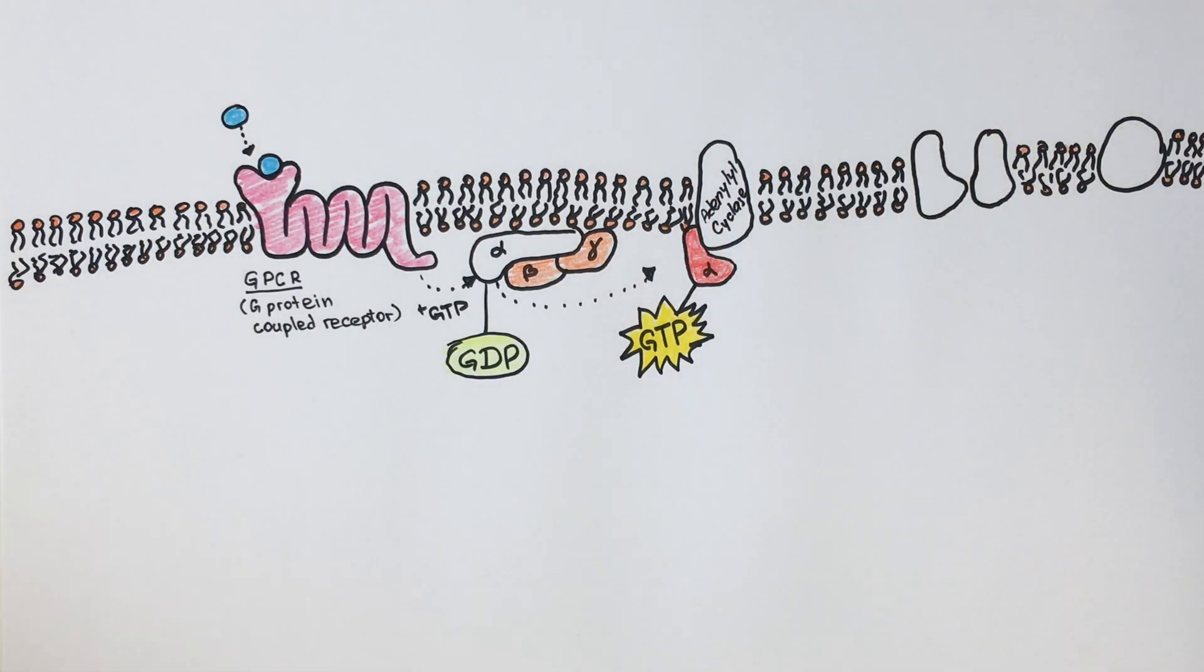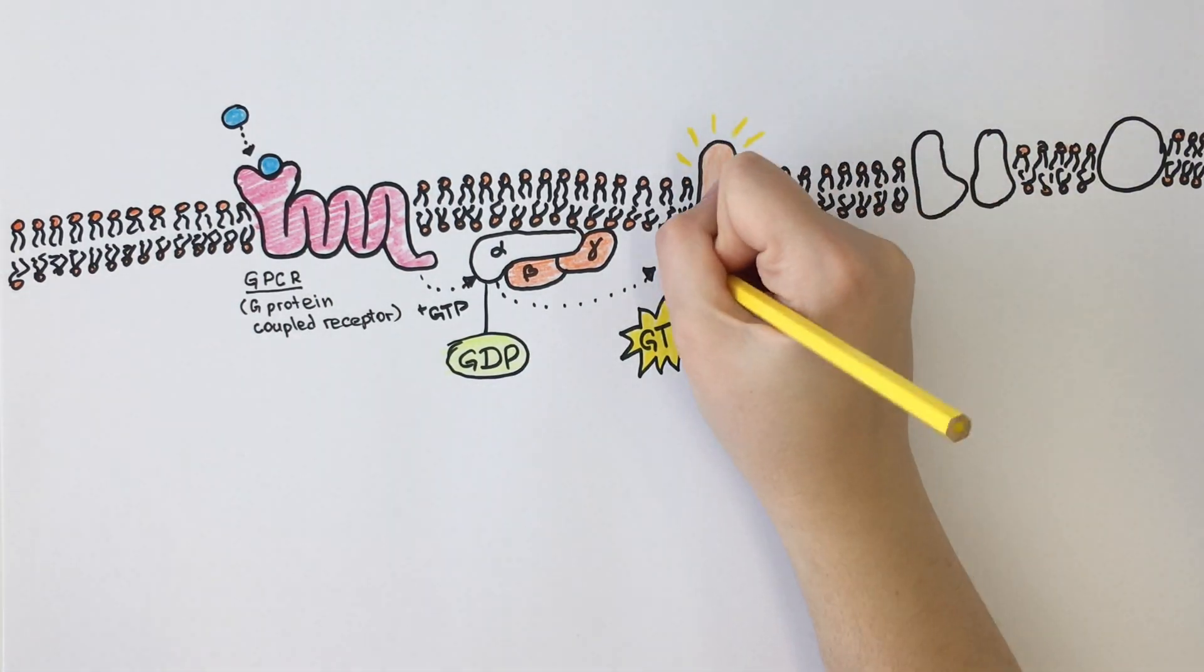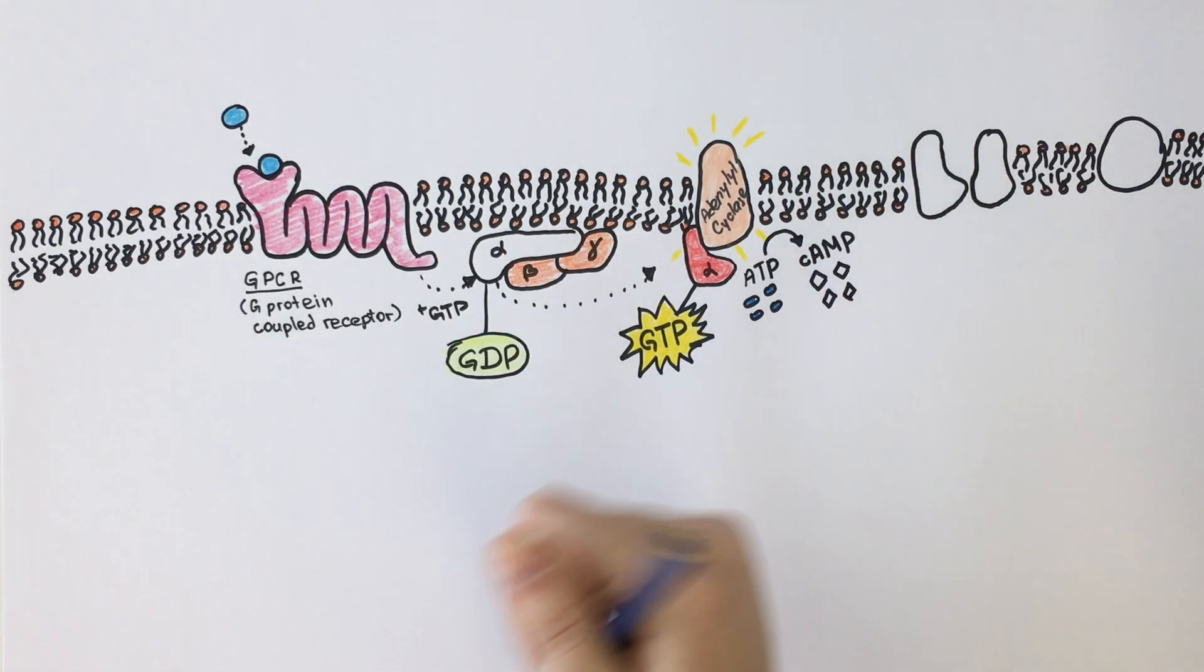In intestinal epithelial cells, the G-alpha binds and activates adenylyl cyclase, which then converts a small amount of ATP to cyclic AMP.